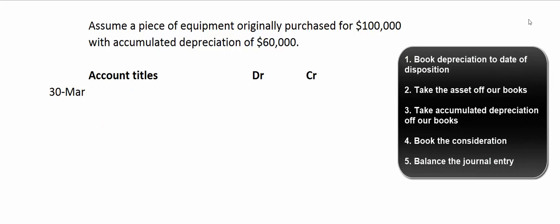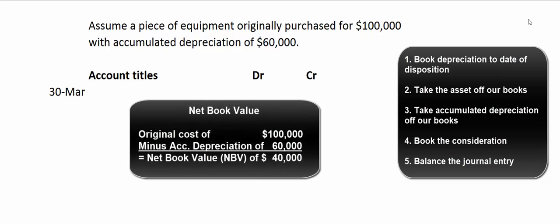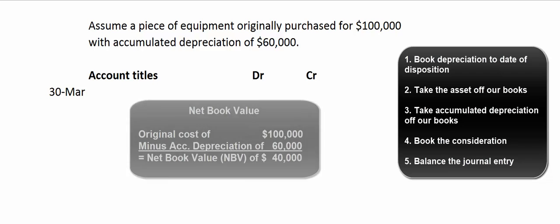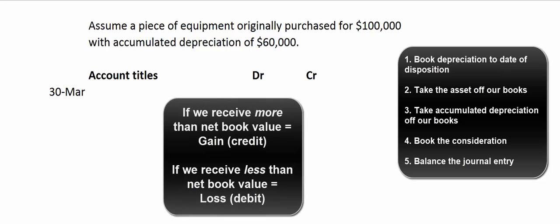Same piece of equipment, but this time instead of just throwing it out, let's pretend we sell it for $50,000 cash. We already know that the book value is $40,000 — $100,000 minus $60,000 of accumulated depreciation means the net book value is $40,000. If we sell it for $50,000, we should end up with a gain of $10,000. Remember, losses are recorded as debits and gains are recorded as credits.